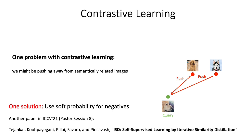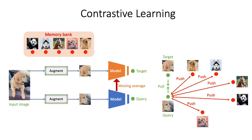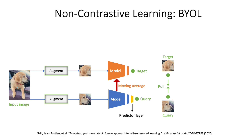Another solution is to completely remove the negatives. This is called non-contrastive learning. As proposed in BYOL, you first remove the negatives and add a predictor layer to prevent model collapse. Now you don't have to worry about pushing away from semantically related images.